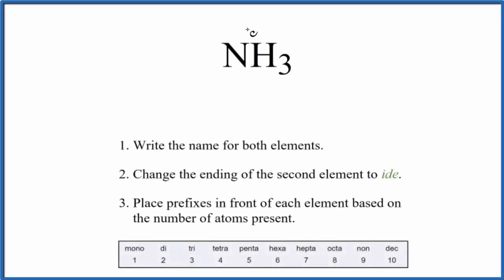In this video, we'll write the name for NH3. This is very common - you'll see this quite a bit in chemistry. NH3 has its own name and you really just have to memorize it: that's ammonia. Most often when you see NH3, it'll be called ammonia, but there is another name we could use.